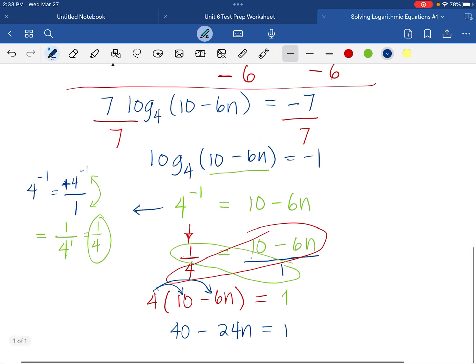And isolating n, we will come up with negative 24n equals negative 40 plus 1. Let's simplify that first.